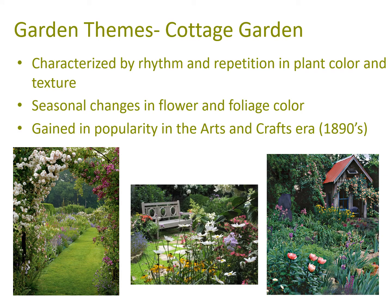The cottage garden is characterized by rhythm and repetition in plant color and textures. Traditional landscape design tries to limit how many different types of plants in one space, but cottage gardens are the exception — they're actually very complex, using seasonality of colors and textures to tie many different species together. There's a lot of planning that goes into making a cottage garden look good, and it is dependent on seasonal changes in flower and foliage. It gained popularity in the Arts and Crafts era of the 1890s.